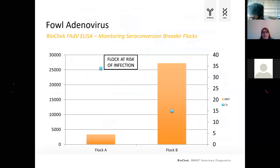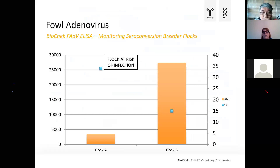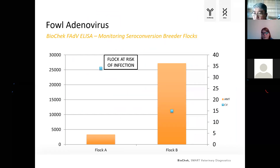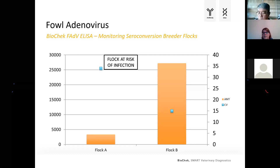Another example of two broiler breeder flocks: Flock A has a mean titer below 5,000 and a high CV at 35, while Flock B has a high mean titer above 25,000 and a low CV of approximately 15%. Clearly, Flock B is protected against the serotypes in the environment, while Flock A is really at risk for vertical transmission during production.